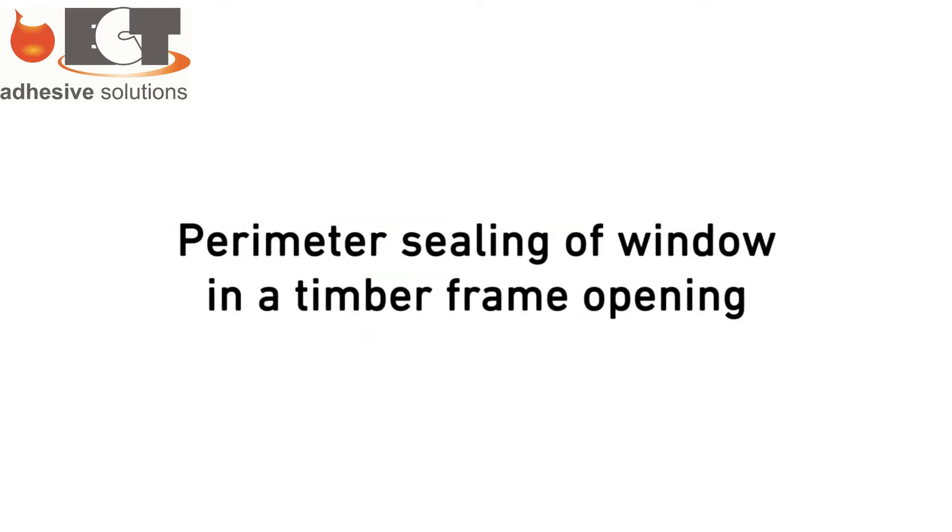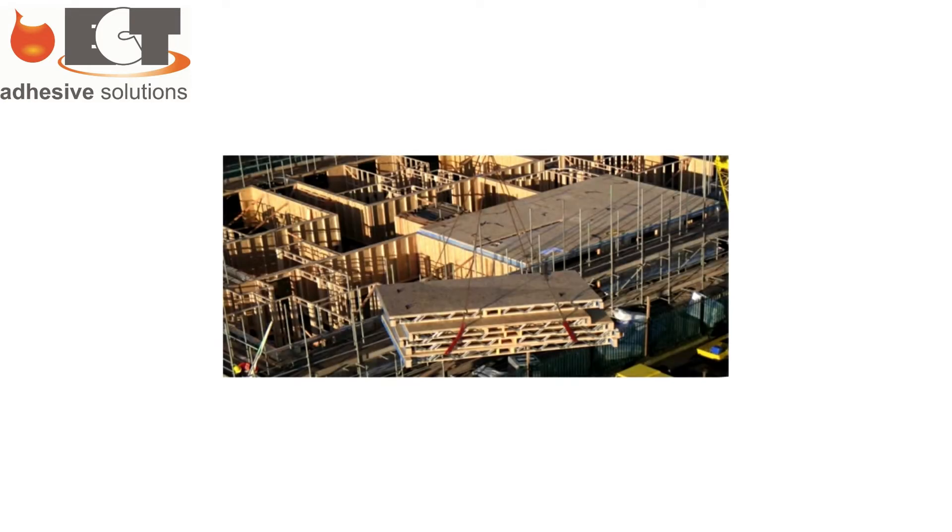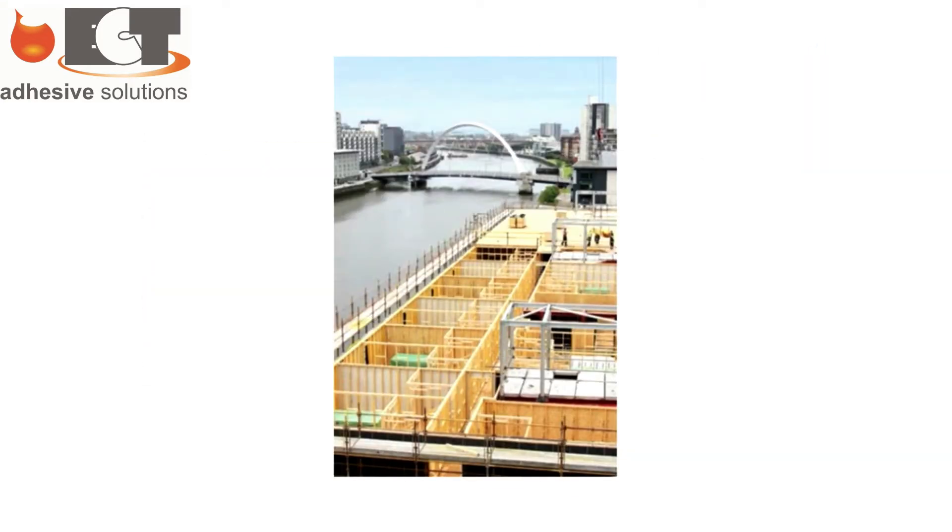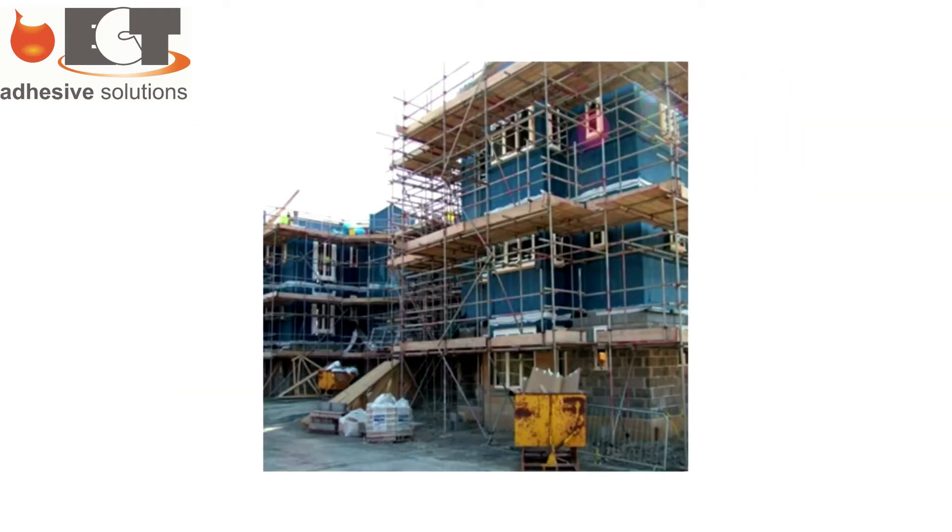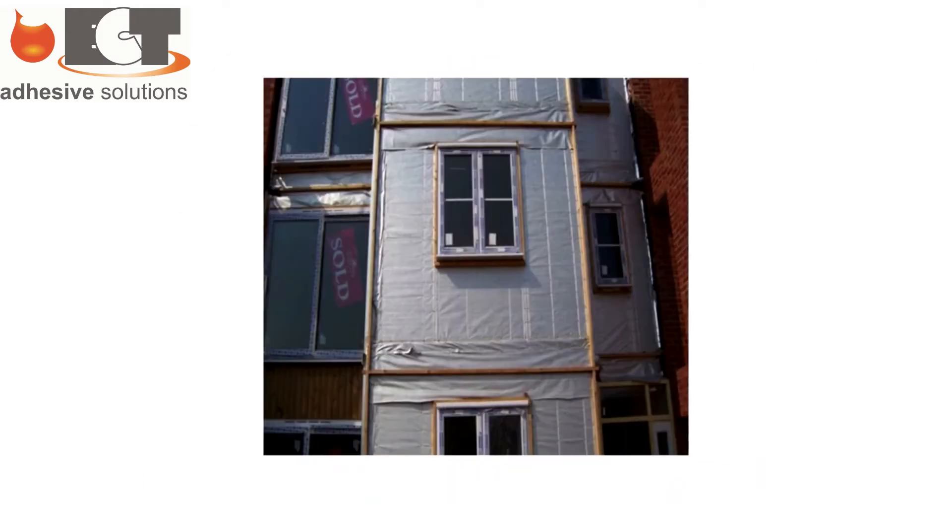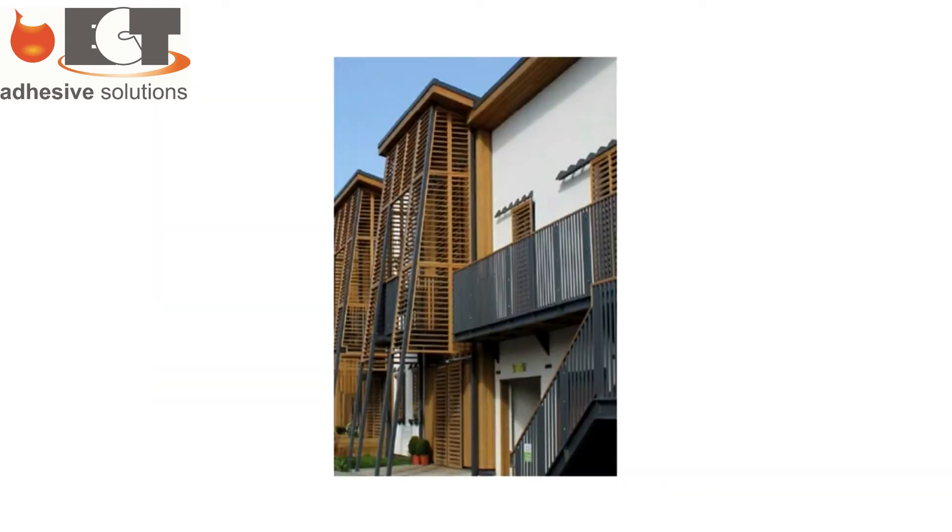This video shows how to provide an external weathertight perimeter seal to a window installed into a timber frame opening. Timber frame buildings several stories high are subject to differential settlement between the internal timber frame wall which the windows are fixed to and the external brick skin. Conventional wet sealants are not capable of accommodating the movement involved.